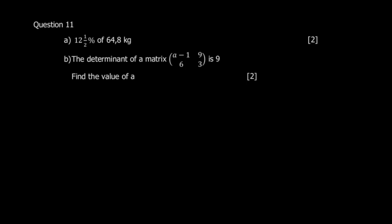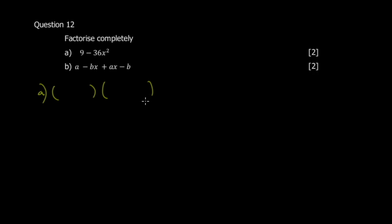Question 12 says factorize completely. You have a square minus a square — this is a dead giveaway, it's a difference of two squares. To factorize, put two brackets: the square root of the first term is 3, and the square root of the second term is 6x. So you get (3 + 6x)(3 − 6x). That's all.